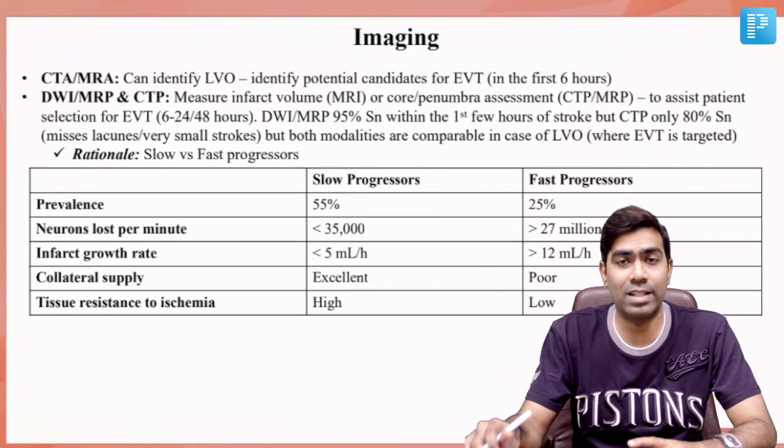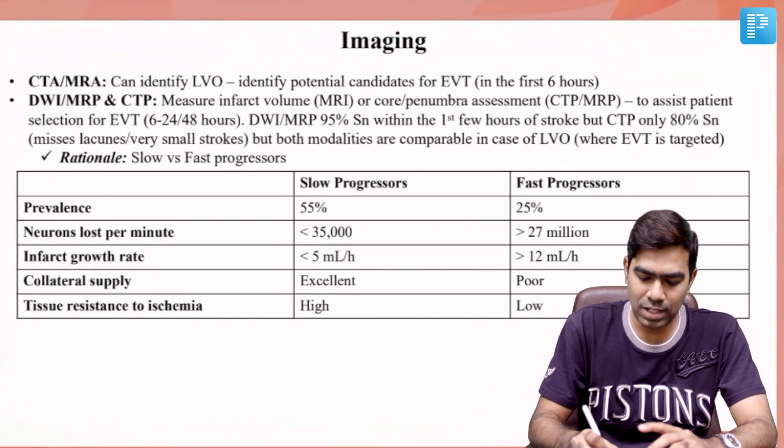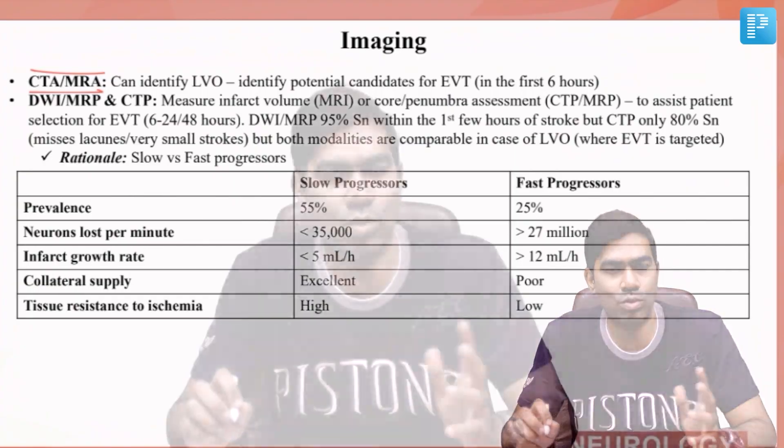Regarding other imaging modalities — CT angiography or MR angiography is most important for identifying large vessel occlusion. If large vessel occlusion is present, endovascular therapy can be considered; if absent, the patient is not a candidate. Most patients undergo CT angiography in the first 6 hours, where it is most useful to determine candidacy for endovascular therapy.